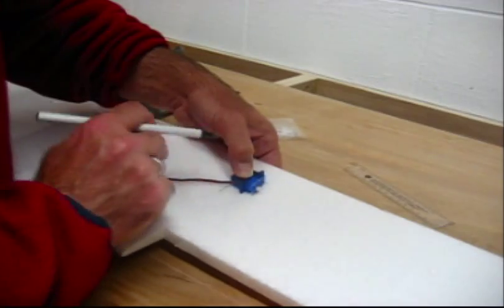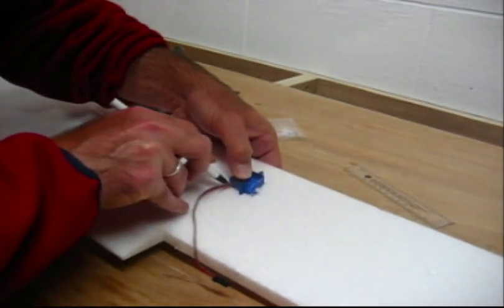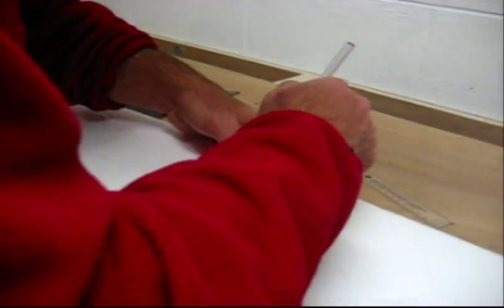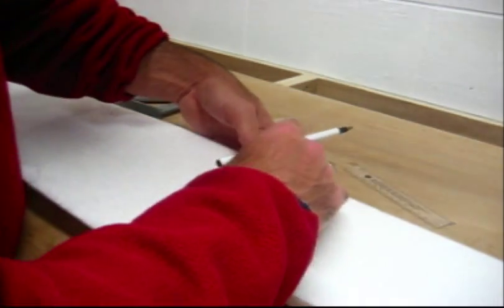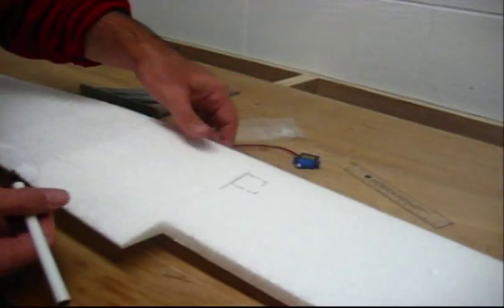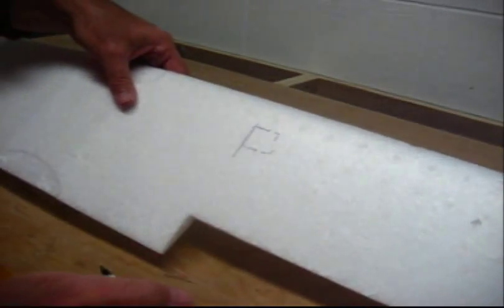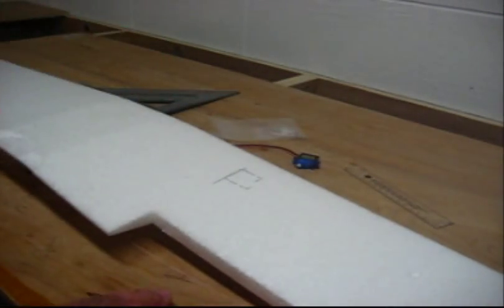And what I'm going to do is I'm going to come back with my hot knife and I will cut this gap out. So now we have the markings on our wing for the servo. And we'll come back and I'll cut that out with my hot knife.